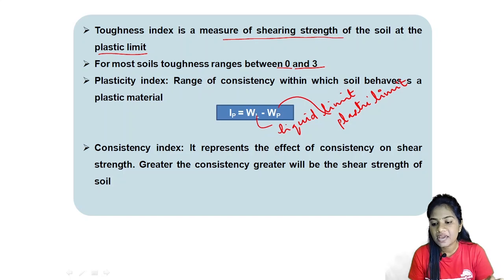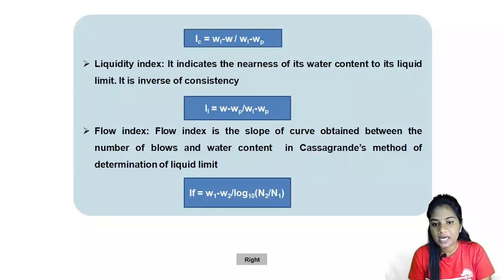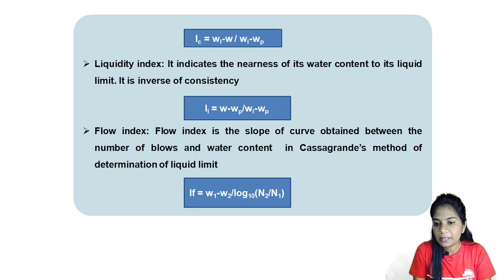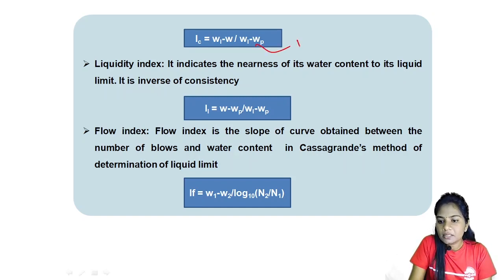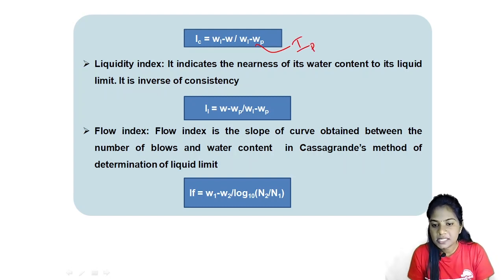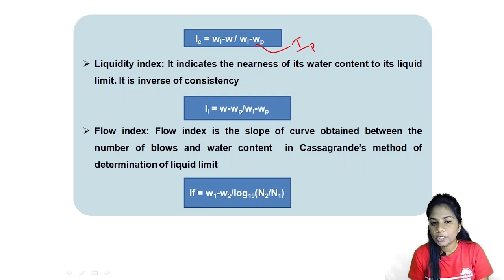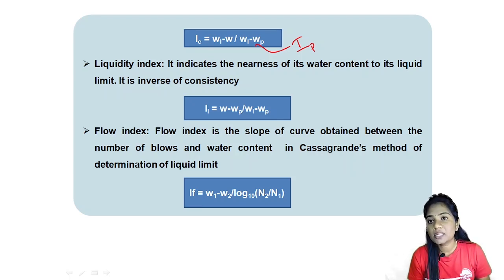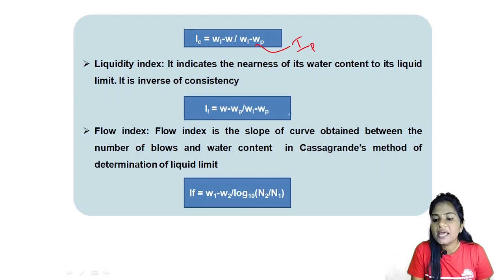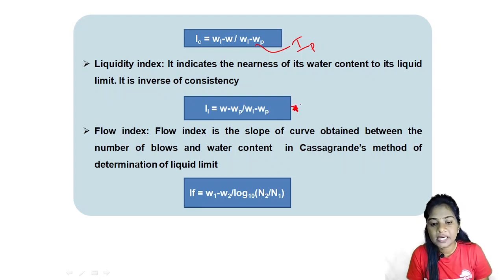The consistency index equation is: IC = (WL minus W) divided by (WL minus WP), where WL is liquid limit, WP is plastic limit, and WL minus WP equals IP. The liquidity index indicates the nearness of the water content to the liquid limit; it is the inverse of the consistency index.